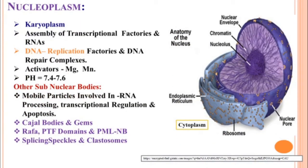The nucleoplasm, also known as karyoplasm, resembles cytoplasm in its chemical composition. It is an assembly of transcriptional factors and proteins. It shows a variety of enzymes needed for DNA replication like helicase, gyrase, topoisomerases, DNA polymerases, and DNA repair complexes. Activators like magnesium and manganese ions are present, and the pH measures about 7.4 to 7.6. Sub-nuclear bodies present in the nucleoplasm include mobile particles involved in RNA processing, transcriptional regulation, and apoptosis — these are Cajal bodies, gems, RAFA, PTF domains, PML nuclear bodies, splicing speckles, and clastosomes.